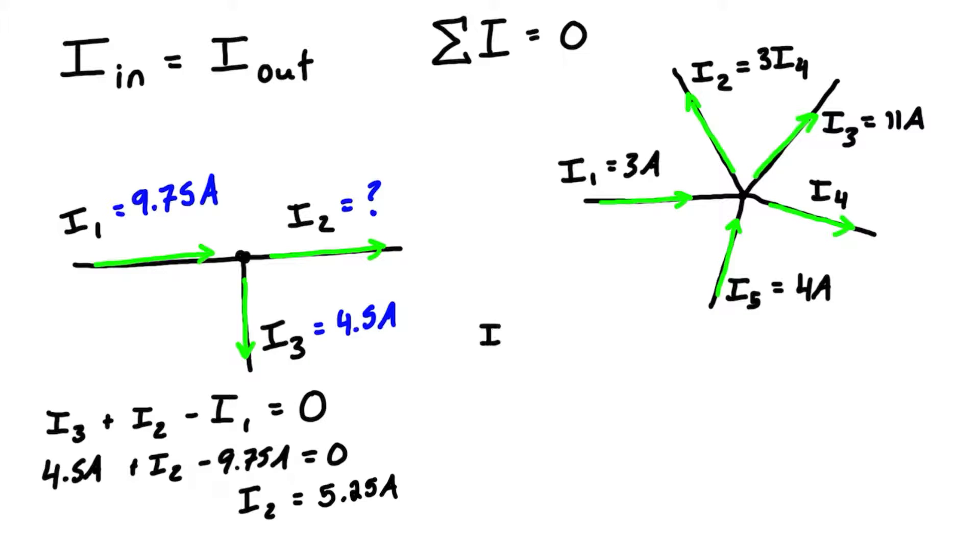We can write our expression: -i1 + i2 (i1 is negative because it flows in, i2 is positive because it flows out). We're going to label on i3 as positive because it flows out, same with i4. Then i5 will be negative because it is flowing in, and we'll set that all equal to zero.